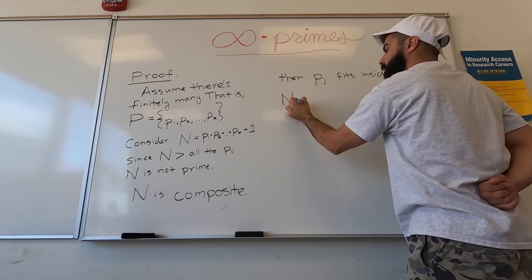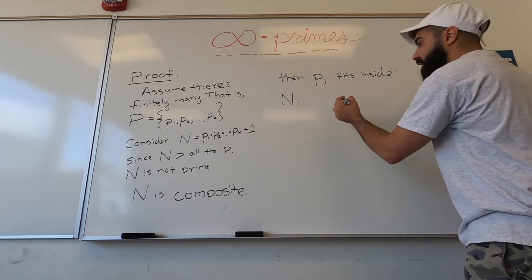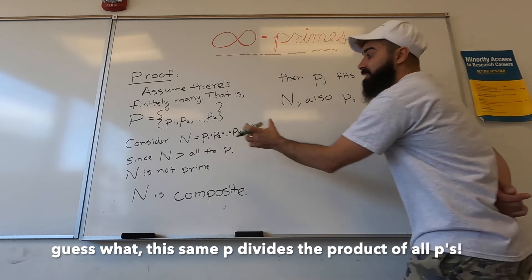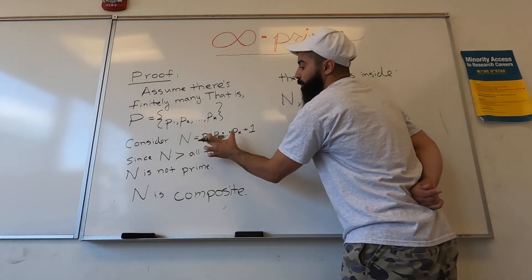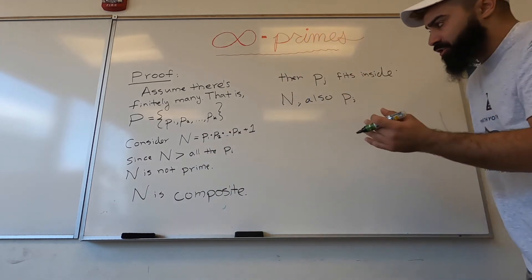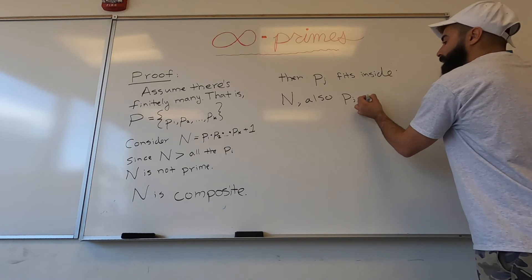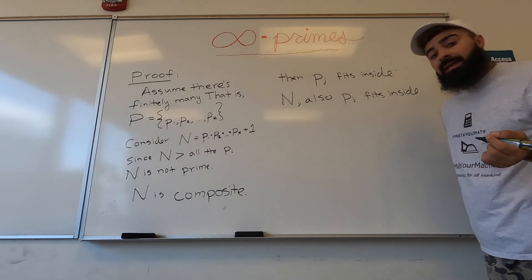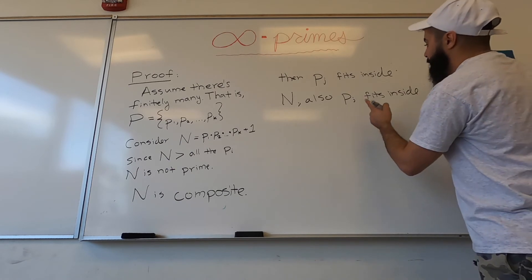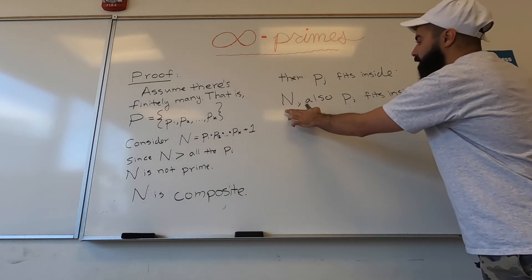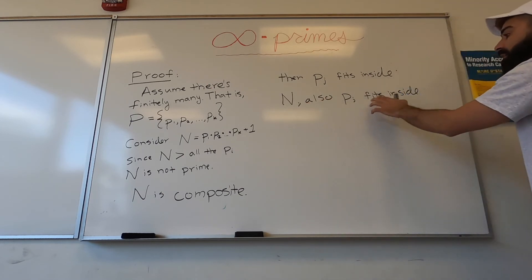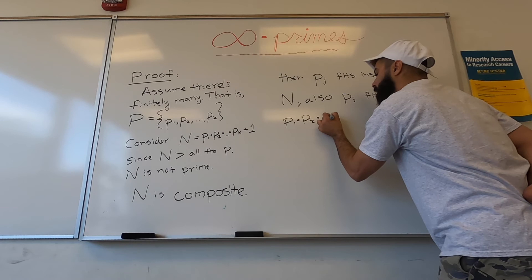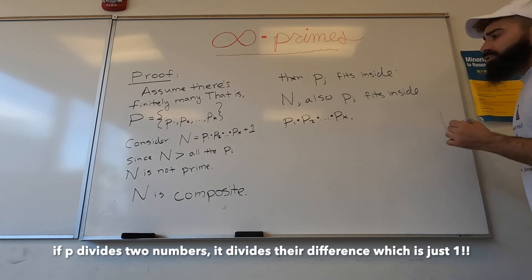So p sub j fits inside N. Also, this pj fits inside the product, right? Because it's one of them. So if you put that product divided by pj, the pj's cancel and you're still an integer. By the way, another word for 'fits inside of' is 'divides.' Mathematicians use the word divides. So pj divides the big N, and pj divides the product p1 times p2 times pk.